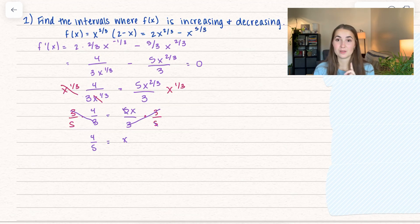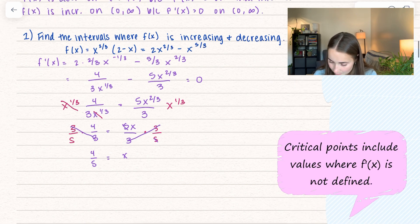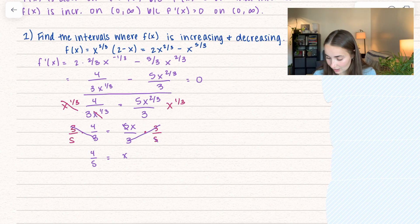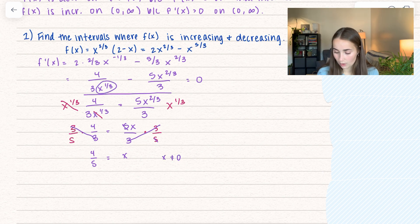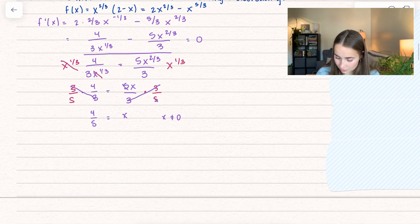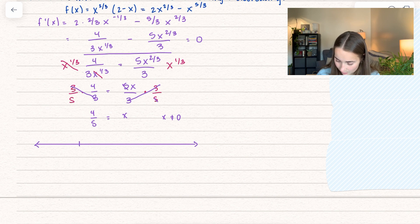Before creating our number line, we need to look for illegal values. Going back to the first derivative, we see x cannot equal 0 because we have x to the one-third in the denominator — plugging in 0 would mean dividing by zero. So we include that on our number line. We have two values: 0 and four-fifths.